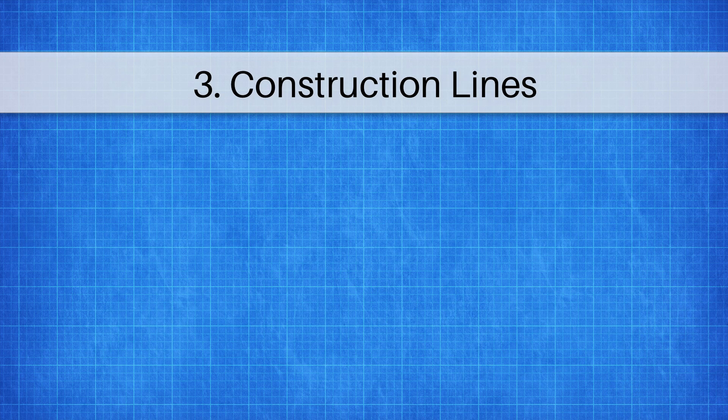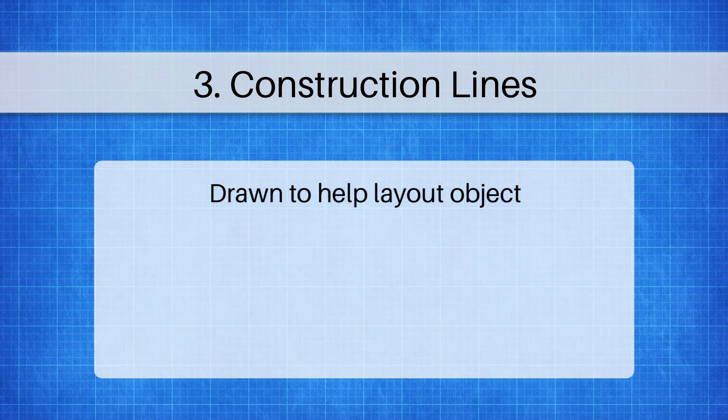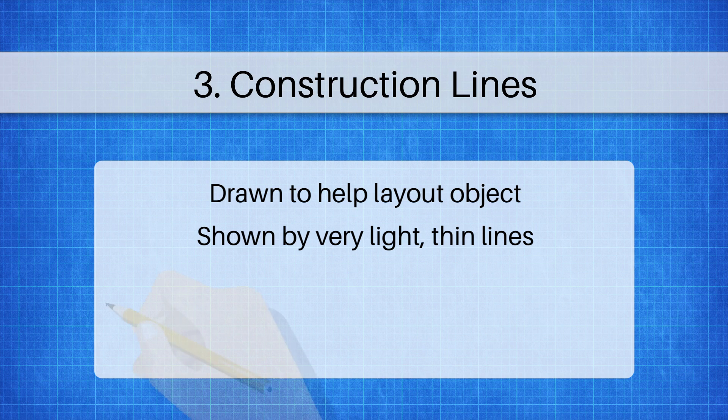And our final type of line is a construction line. A construction line is very light, very thin, and there to be erased. It's really there to help guide you on where you're going to be setting up your visible and hidden lines.